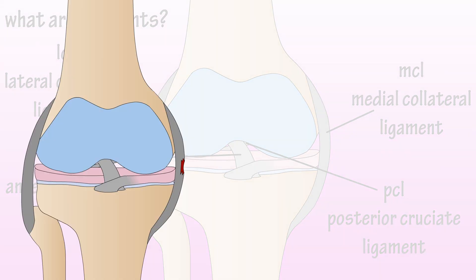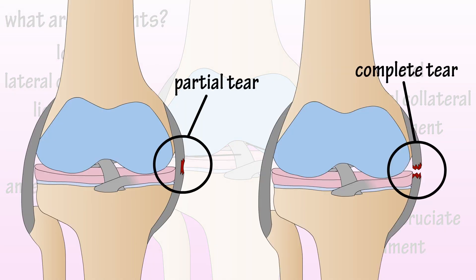Ligaments can suffer partial or complete tears, as you see in this illustration. Most common ligament damage occurs in athletes, for instance in the ACL. If it's a partial tear, a surgeon will typically attempt to stitch it. If it's a full tear, it's much more complicated, and usually a surgeon will replace the ligament with a piece of healthy tendon.